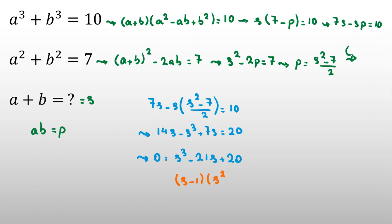Factoring: s³ - 21s + 20 = (s - 1)(s² + s - 20). We can factorize the quadratic: (s - 1)(s + 5)(s - 4) = 0.